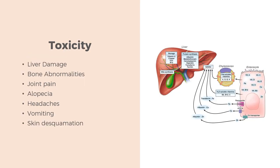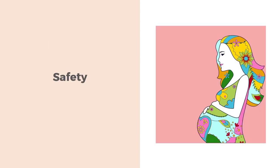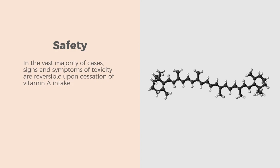Because vitamin A as retinol ester is stored in the liver, large amounts taken over a period of time can eventually exceed the liver storage capacity, spill into the blood, and produce adverse effects like liver damage, bone abnormalities and joint pain, alopecia, headaches, vomiting, and skin discoloration. Normal fetal development requires sufficient vitamin A intake, but consumption of excess retinol during pregnancy is known to cause malformations in the newborn. Current levels of vitamin A in fortified foods are based on RDA levels, ensuring no realistic possibility of vitamin A overdosage in the general population. In the vast majority of cases, signs and symptoms of toxicity are reversible upon cessation of vitamin A intake. Beta-carotene is considered a safe form of vitamin A because it is converted by the body only as needed.